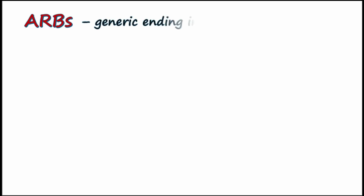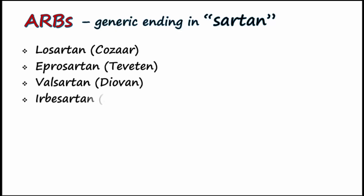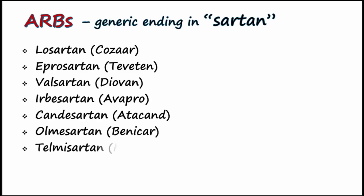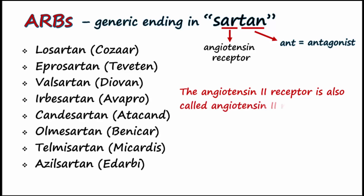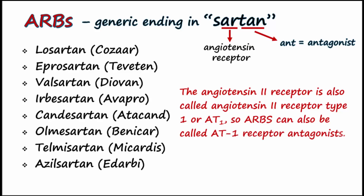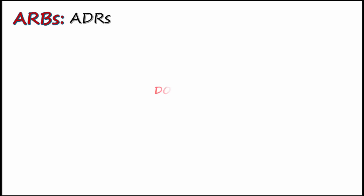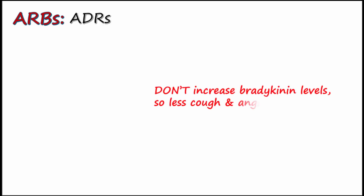Generic names of angiotensin receptor blockers, or ARBs, end in -SARTAN. There are many examples, and notice they all end in SARTAN. The AR in SARTAN stands for angiotensin receptor, and TAN is a rearrangement of the letters A and T, referring to antagonist. The angiotensin 2 receptor is also called angiotensin 2 receptor type 1, or AT1, so ARBs can also be called AT1 receptor antagonists. ARBs have a similar side effect profile as ACE inhibitors, but since they don't increase bradykinin levels, they cause less cough and angioedema.